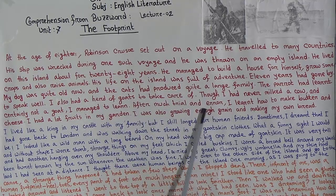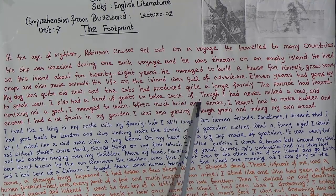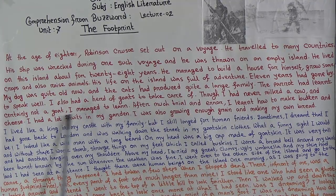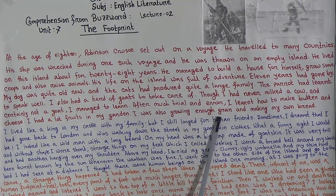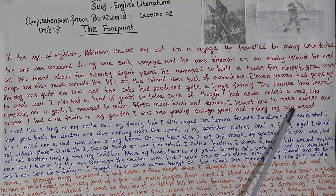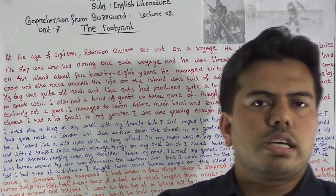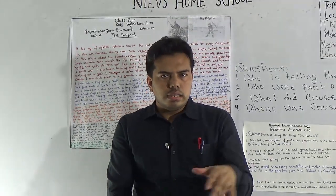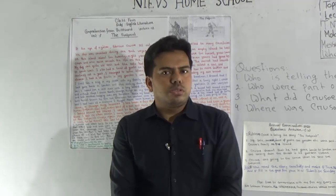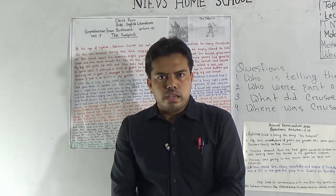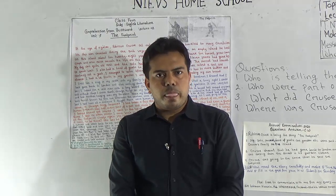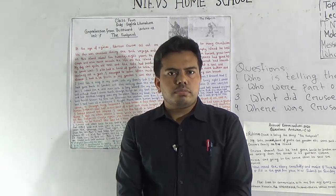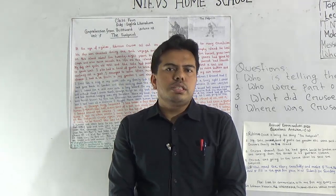'I managed to learn after much trial and error' — trial and error means to do something making mistakes first, then finally correcting them. 'I learned how to make butter and cheese. I had a lot of fruits in my garden. I was also growing enough grain and making my own bread.' So in this first phase we can understand that Robinson Crusoe, on the isolated island, had to experience milking, herding, and farming. He faced many challenges and tried to manage everything.